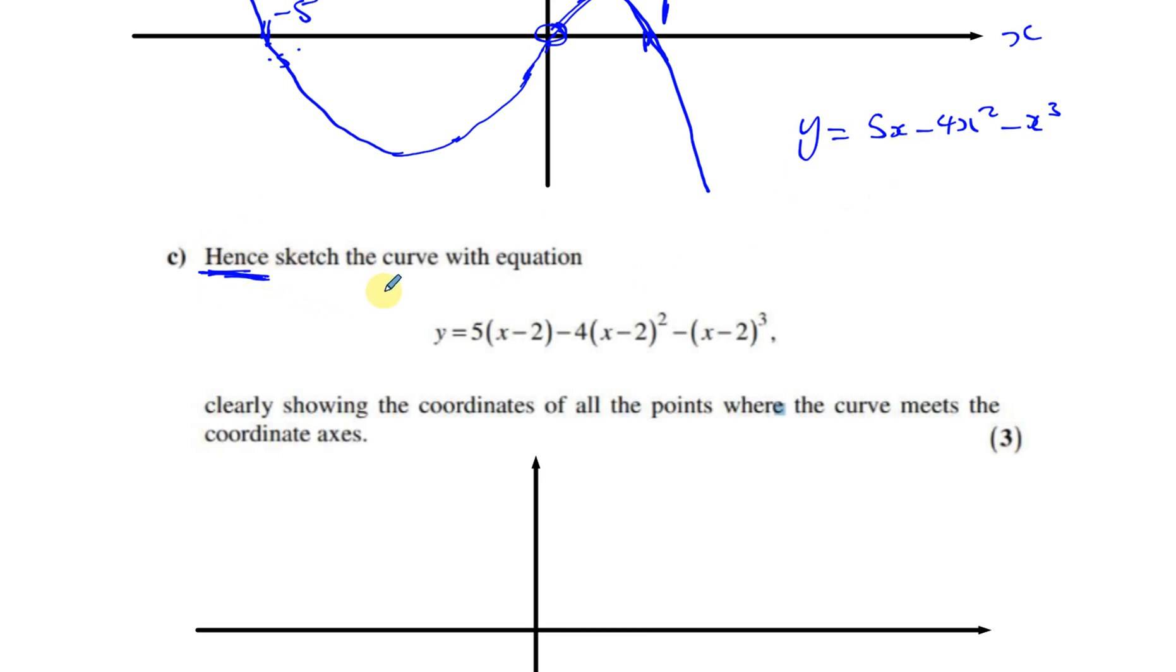Normally when it says hence, it's normally easier for you to use what's before. Even when it says hence or otherwise, it's normally easier for you to use what you did before rather than doing it in another way. So it's always best when you see the word hence, even if it says hence or otherwise, always look at the previous question and see some sort of connection. And if you look carefully enough, this looks very similar to that. This is 5 times something minus 4 times something squared minus something cubed. So you can see that basically what's happened is the X has been replaced by X minus 2. The X has been replaced by X minus 2. So it's Y equals F of X minus 2.